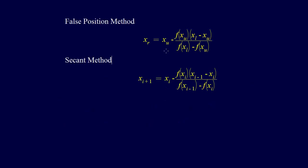Looking at the equations for the false position method and the secant method, the root equals x_upper minus f(x_upper) times (x_lower minus x_upper) over the difference of the function values. Both equations look identical — x_upper corresponds to x_i, and x_lower corresponds to x_{i-1}. But these methods are actually distinct, and we need to understand the difference between them.